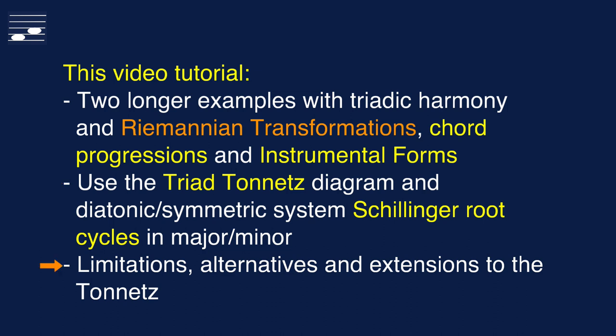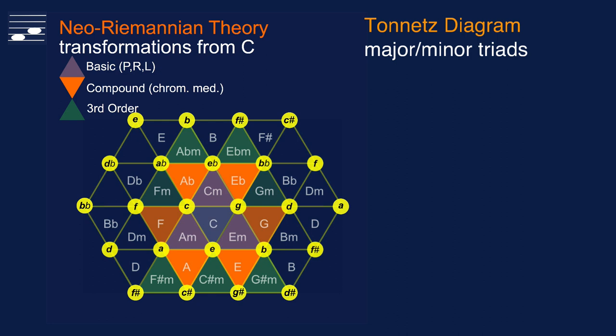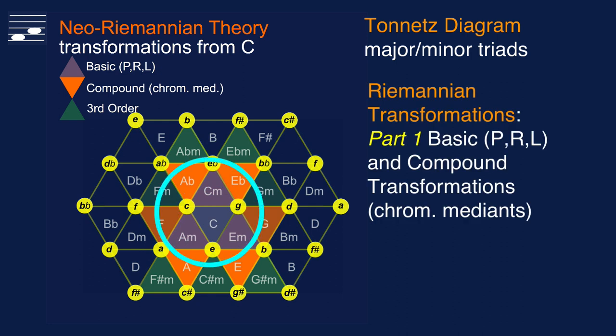This section will briefly look back on the previous episodes without going into detail. Application of Neo-Riemannian theory uses the triad Tonnetz diagram with triangles representing major and minor triads. We may create paths through the diagram by applying basic and compound Neo-Riemannian transformations, as I discussed in part 1.